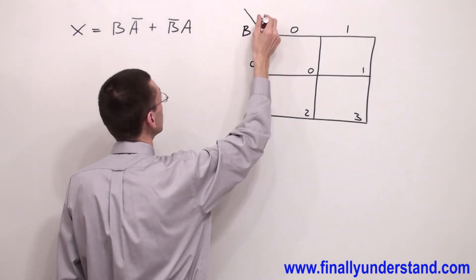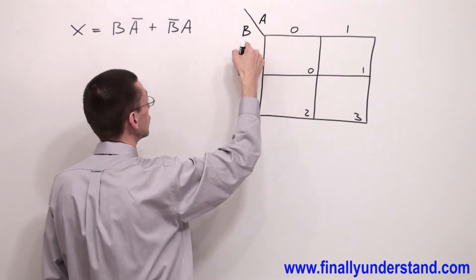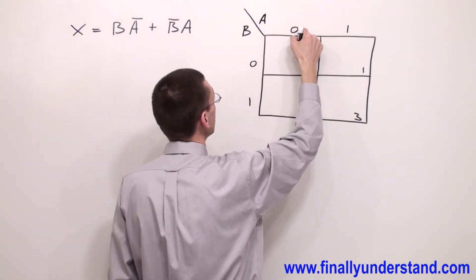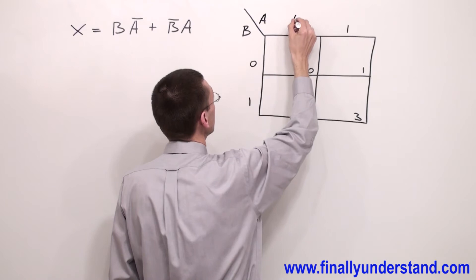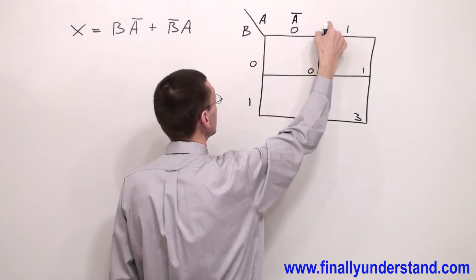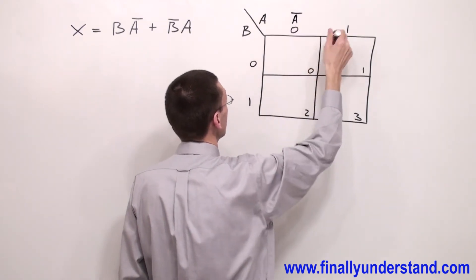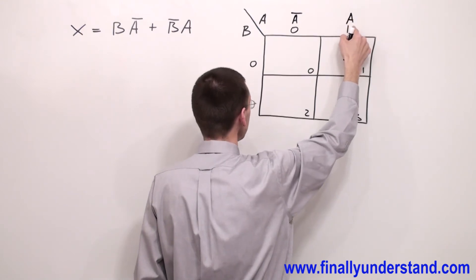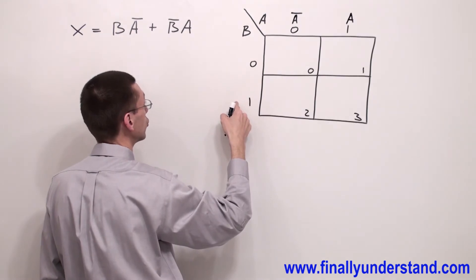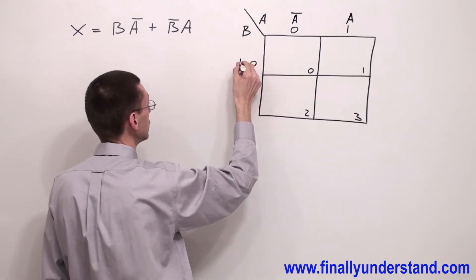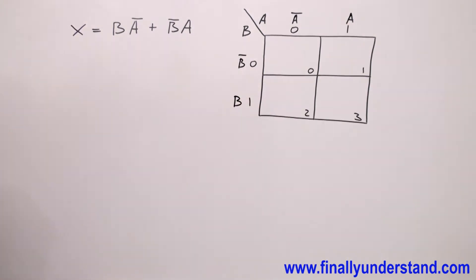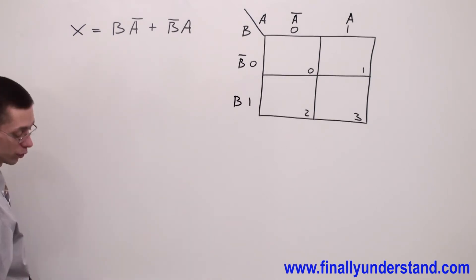And the top is for the least significant bit. In other words, B is going to control the left side of the map and A is going to control the top. Anytime you have zero, simply write above zero A-not, because A controls the top and because I have zero this is A-not. And over one I said the left side is controlled by B, so anytime I have zero this is B-not, and anytime I have one this is B.